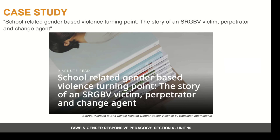In what ways was Alice a victim? She was beaten by her father. She was ridiculed by her teachers as a stupid girl and received unwanted sexual advances from her teacher. This made her hide regularly in the lower form to avoid being in that situation again.